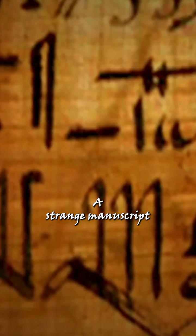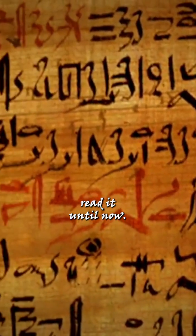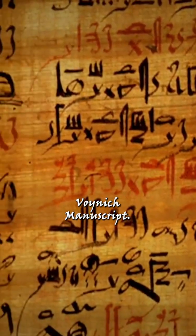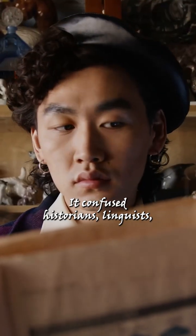A strange manuscript appeared in 1912. No one could read it. Until now, known as the Voynich Manuscript, it confused historians, linguists, and even code breakers.